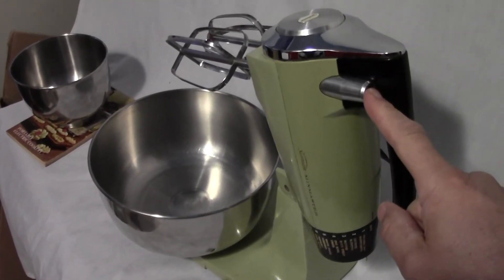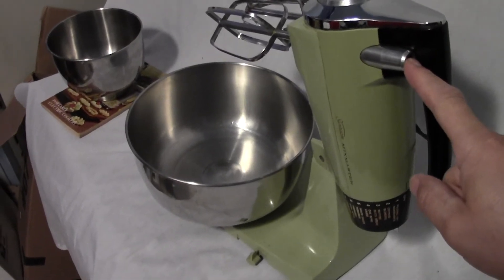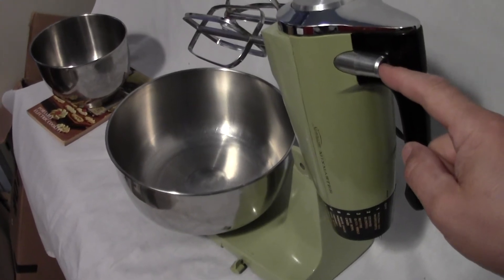There's a power take-off right here. If you can find the optional juicing attachment that fits right on there, there's other things that fit on there too, but the juicer is the main thing that shows in the book.